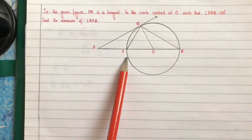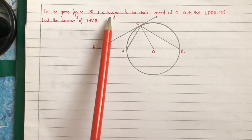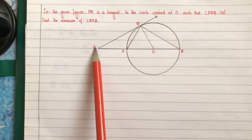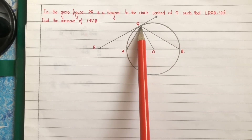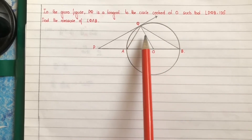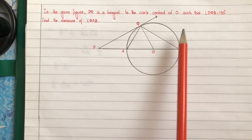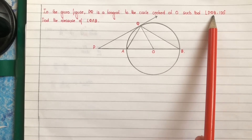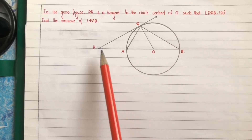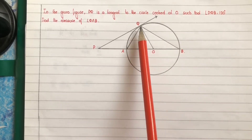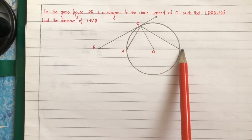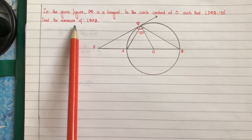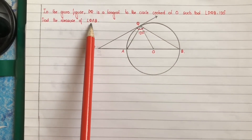In the given figure, PQ is a tangent to the circle centered at O, such that angle PQB is equal to 120 degrees. Find the measure of angle QAB.